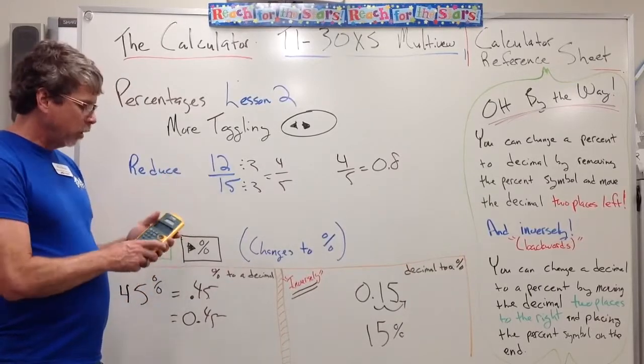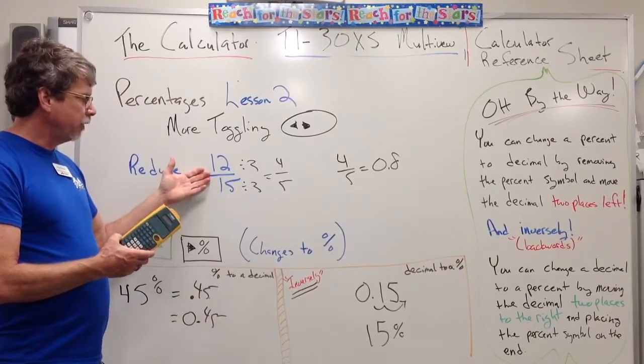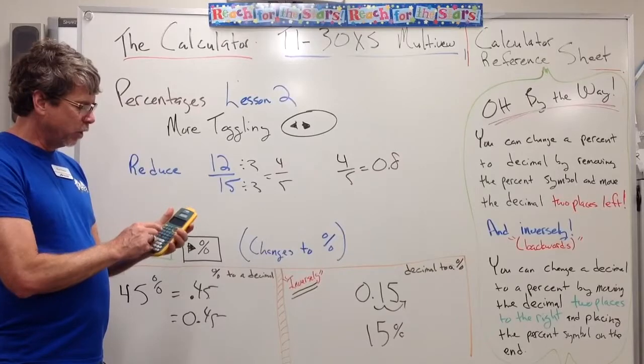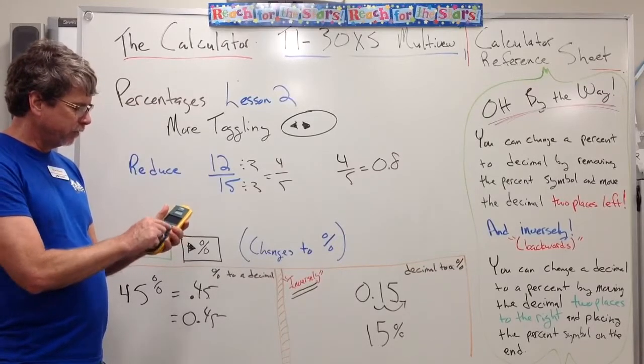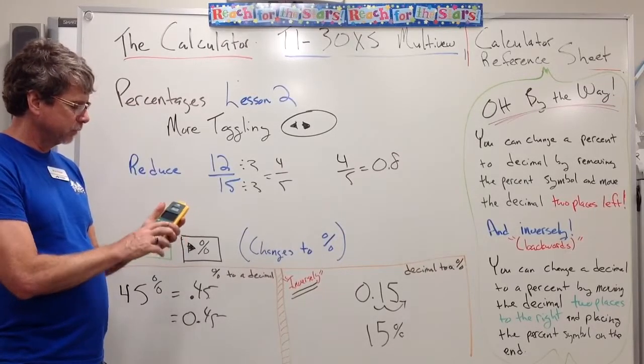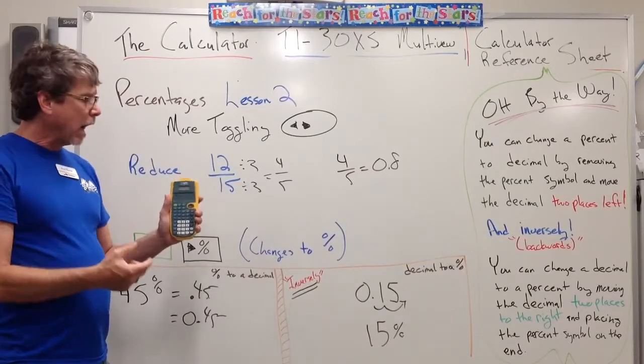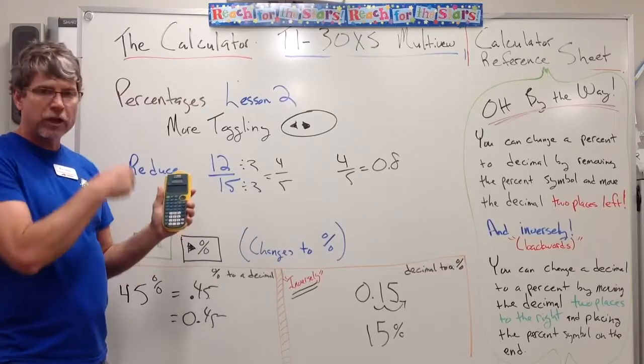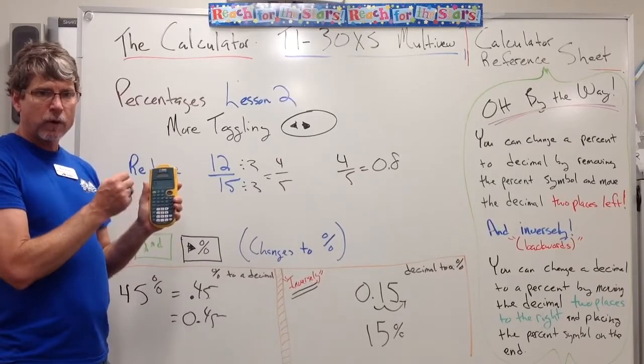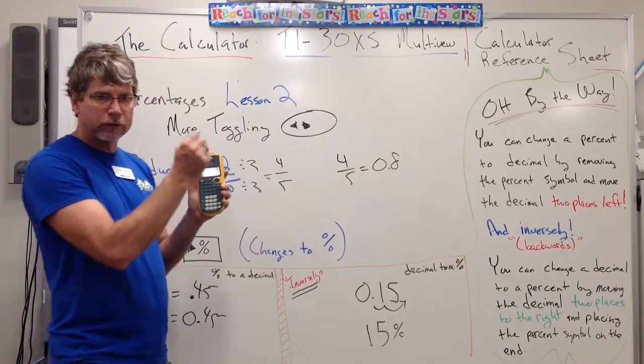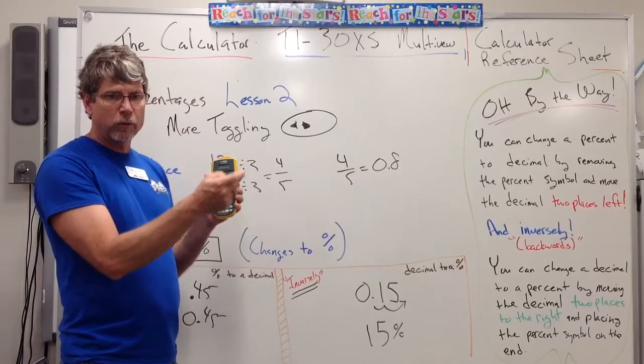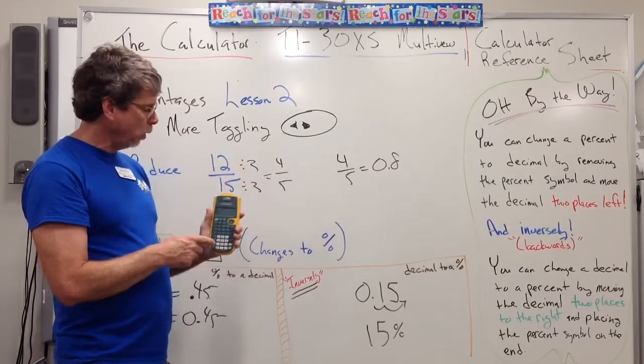So if I had this problem of 12-15ths, I could use the N over D button, I could type the 12 over 15 into the calculator, hit enter, it'll change it to four-fifths. I can then hit the toggle button and change it to a decimal. If I want to, I can move my decimal two places to the right, stick on a percent symbol, that would be 80%.